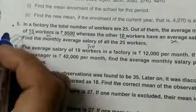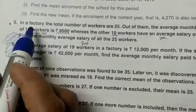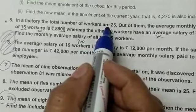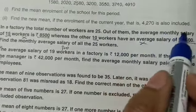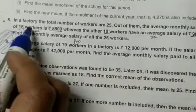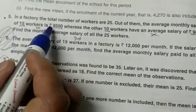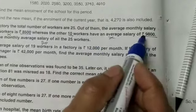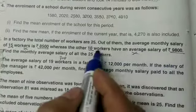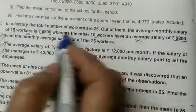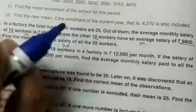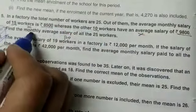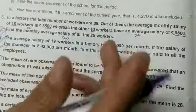Question number 5. This is very important. In a factory, the total number of workers are 25. Out of them, the average monthly salary of 15 workers is 8500, whereas 10 workers have an average salary of 9800. 15 plus 10 equals 25. They have different salaries. Find the monthly average salary of 25 workers.